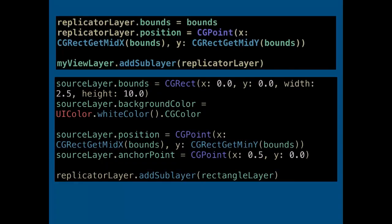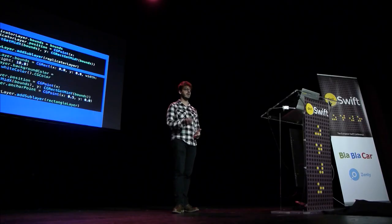For the source layer, no magic: we create a rectangle, we give it a color, and it's important to define its position. As we know, we define the position of a layer through its position and anchor point. Then we add it as a sublayer of the Replicator Layer.